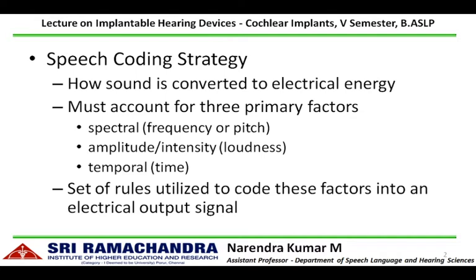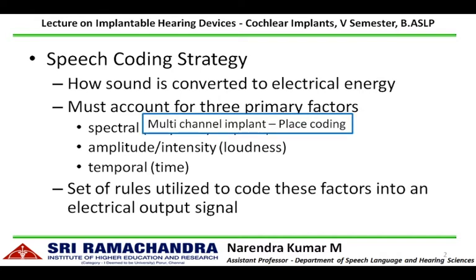The spectral information can be handled by a series of bandpass filters that correspond to the multi-channel intracochlear implant electrode array. It happens through place coding, where the basal electrodes correspond to high frequencies and the apical electrodes correspond to low frequencies.